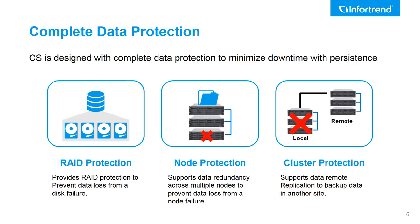What makes EonStore CS special is its three-layer data protection architecture. At the bottom, all the disks are protected by RAID technology, and system performance will not degrade when multiple drives fail on different nodes. For node protection, EonStore CS supports protection against node failures. The third layer is to replicate data remotely between clusters to prevent any natural disasters.